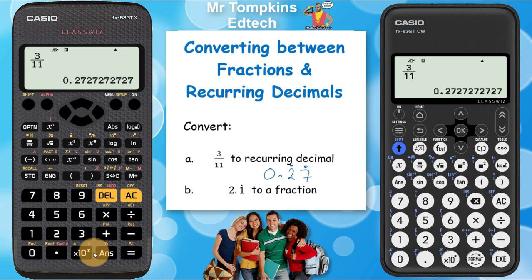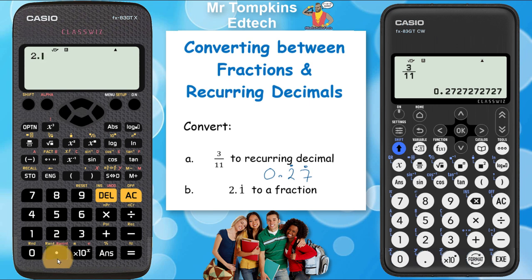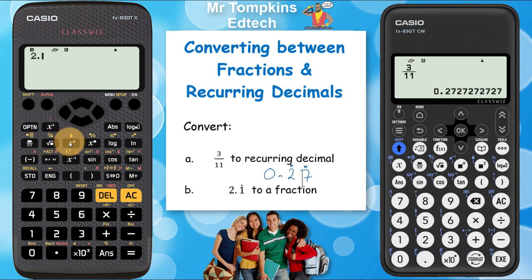Going back the other way: if you have 2.1 with a dot on top and want to convert it to a fraction on the old calculator, press 2 first, then the decimal point. To enter the dot above the 1, use the function above the x-squared button — a little box with a dot on top. Press shift to access it, then the x-squared button, and you get that box with a dot on top.